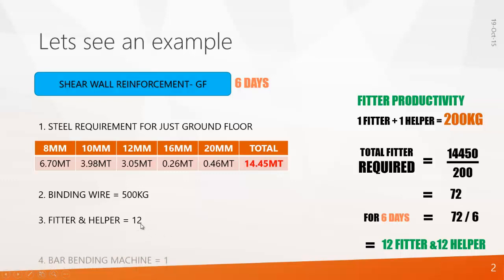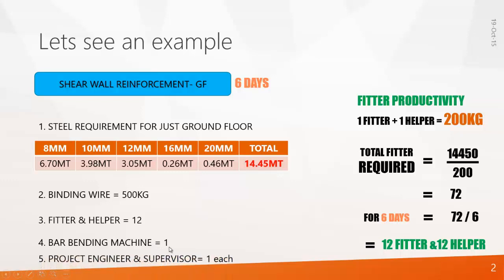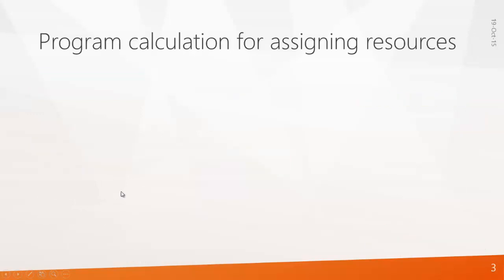We require 1 bar bending machine, also 1 project engineer and 1 supervisor. So these are the resources required to perform Shear Wall Reinforcement for ground floor. In Primavera, we have to create these resources. Now let's see another calculation for assigning resources.